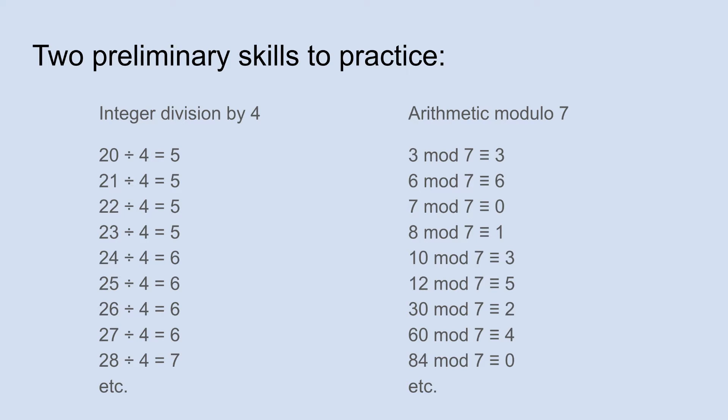Integer division by 4 basically just means ignore the remainders. So 20 divided by 4 is obviously 5, but also 21, 22, and 23 divided by 4 are all just 5. And obviously once you get up to something like 24, then you're back up to 6.